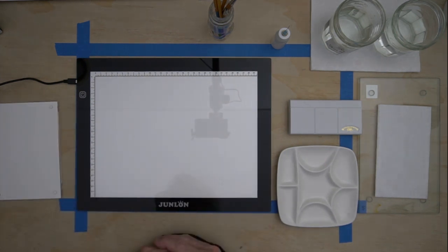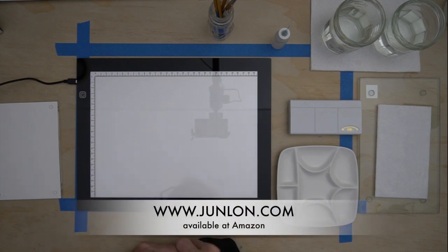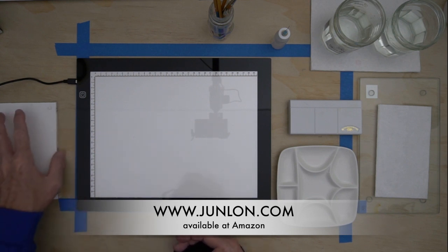And you can see here that I have a new light box. It's J-U-N-L with an umlaut-N, and I think in English it's Junleon. It's a pretty good light box. I like it.